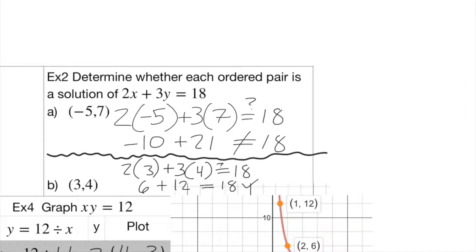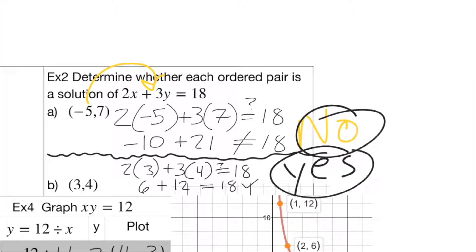Example number two, determine whether each ordered pair is a solution of the equation. All you've got to really do is take these numbers and plug them in. What you see is that negative 5, 7, when you plug it in, becomes negative 10 plus 21. Is that equal to 18? No, it's not. But when you take 3 and 4 and plug it in for x and for y, you get 2 times 3 is 6, 3 times 4 is 12. Is that equal to 18? Yes, it is. So these are each no or yes kinds of questions.